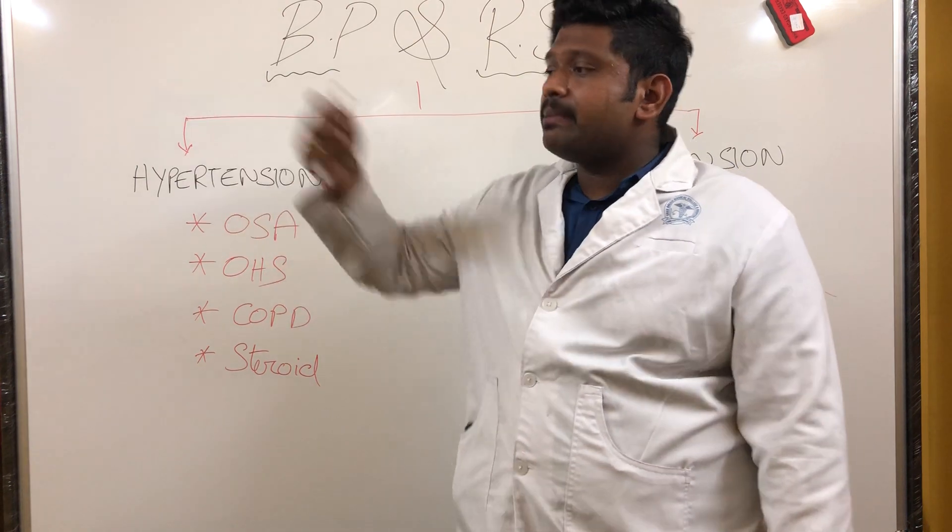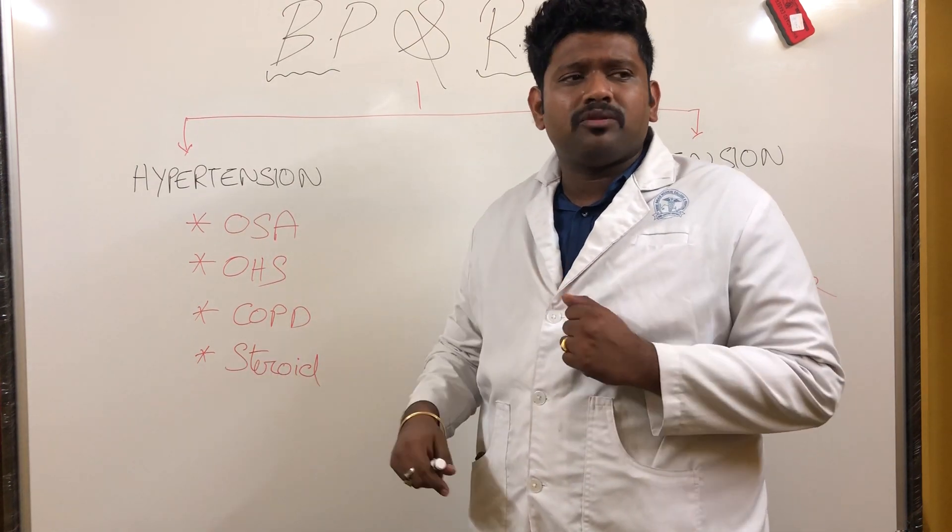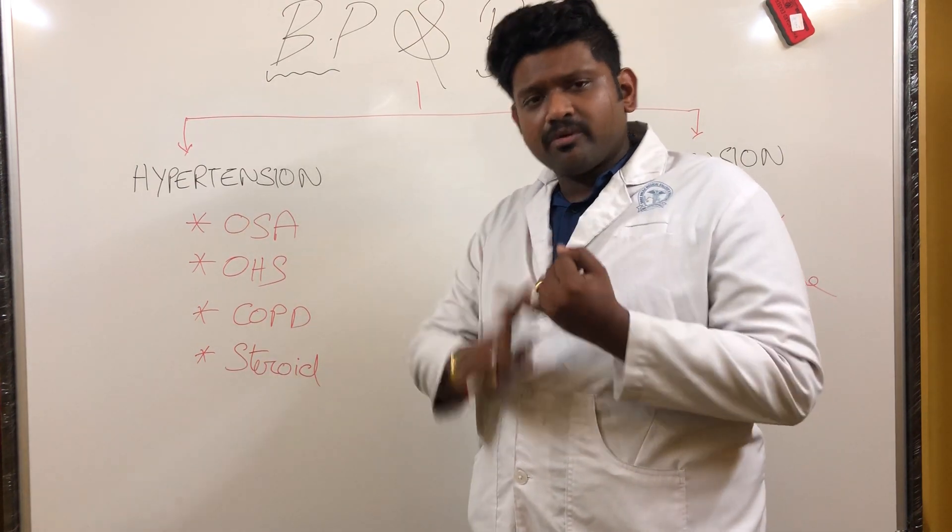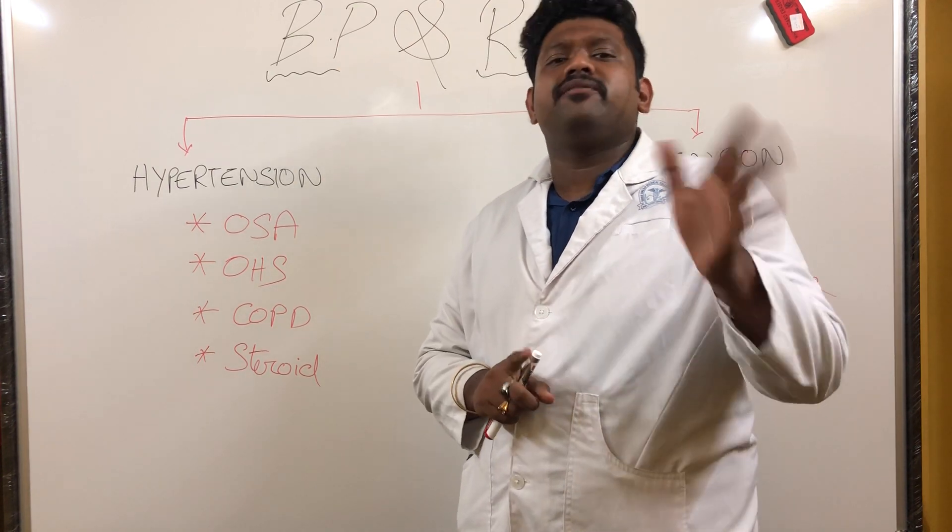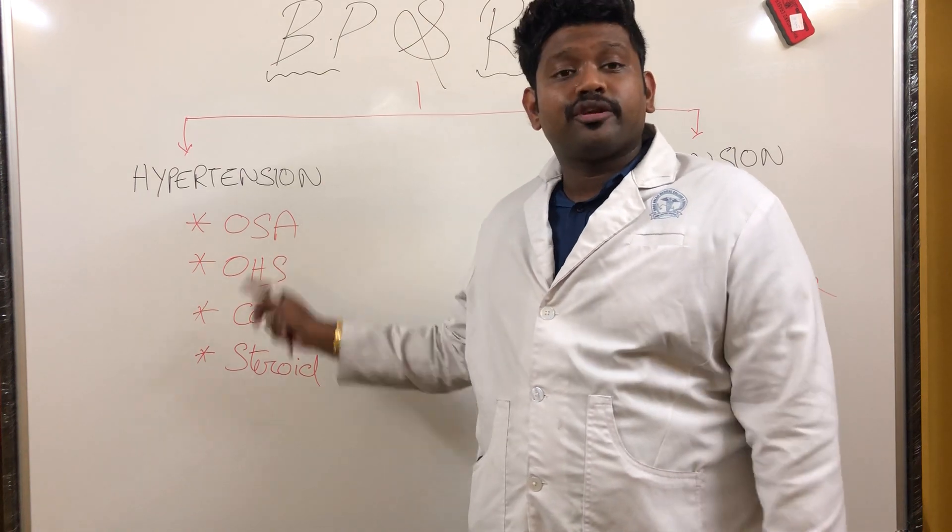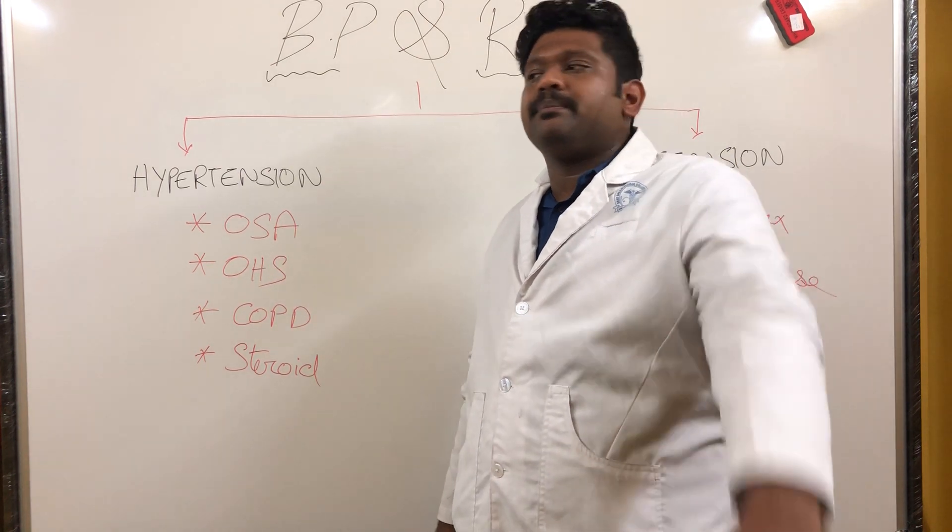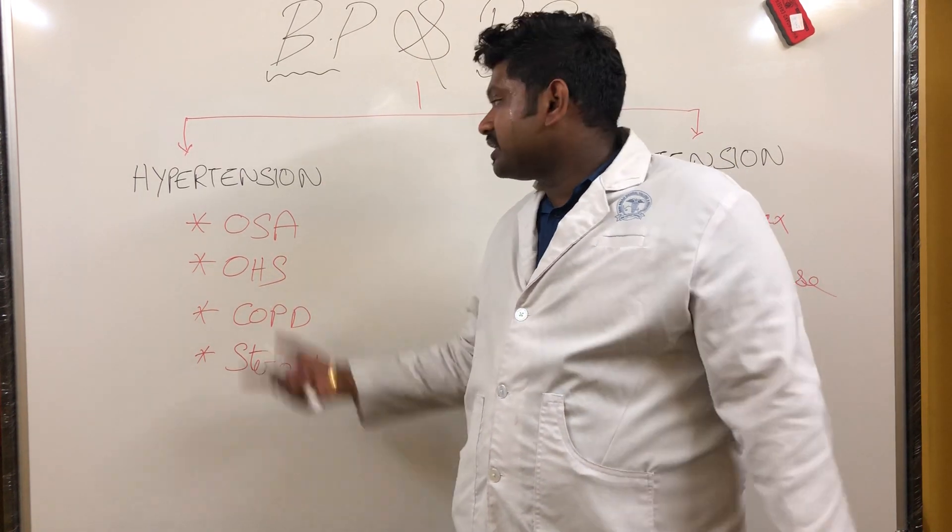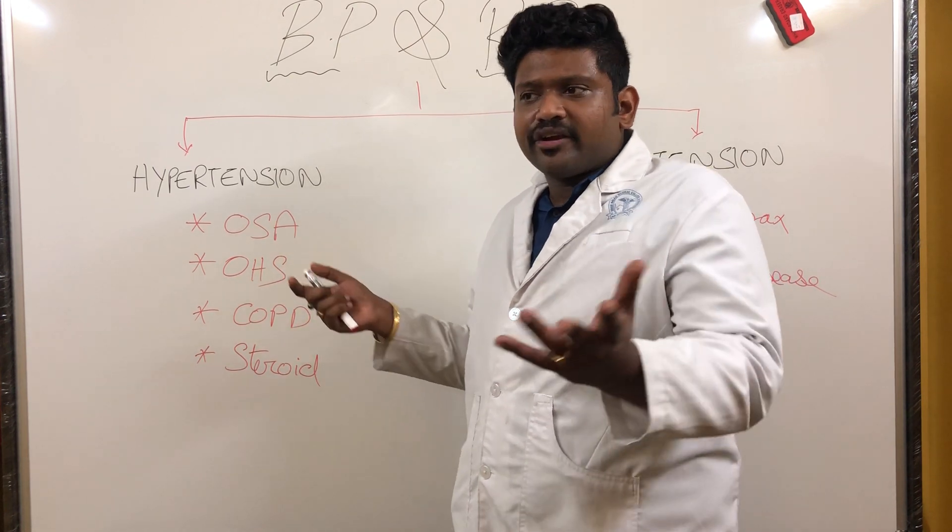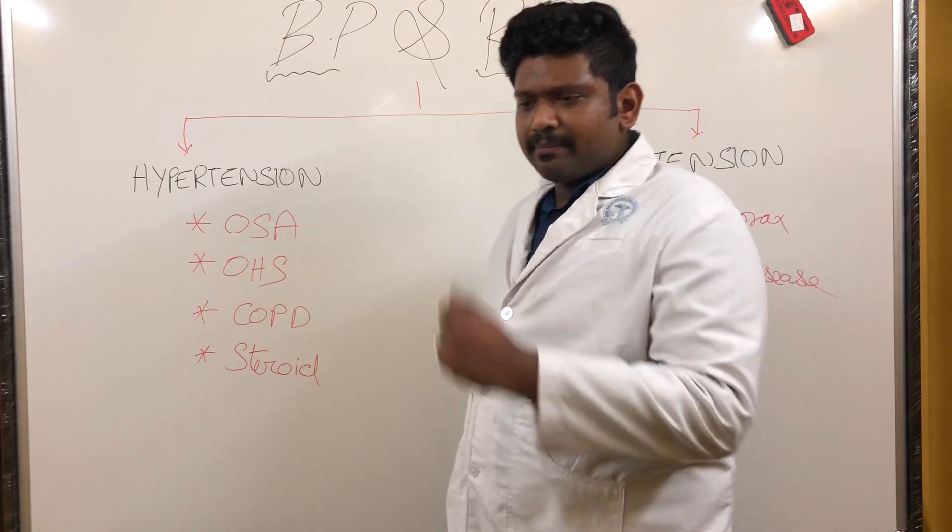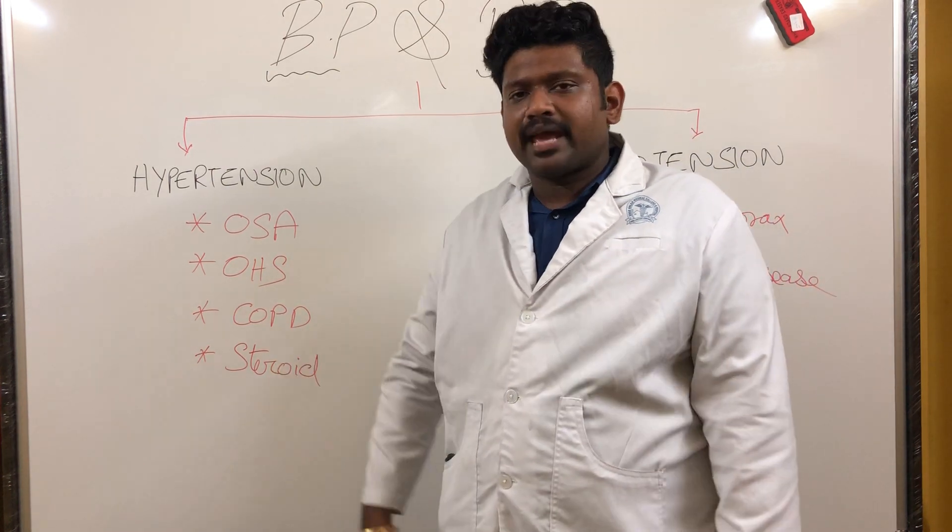Hypertension is a very important comorbidity associated with OSA. These hypertension patients will go to medicine clinic, diabetologist, hypertension specialist, cardiologist saying they have high BP. They'll start them on diuretics, ACE inhibitors, ARBs, calcium channel blockers, but the BP won't reduce unless you treat the OSA with CPAP.